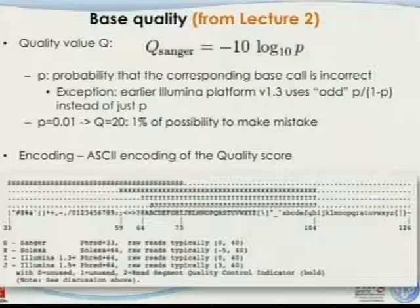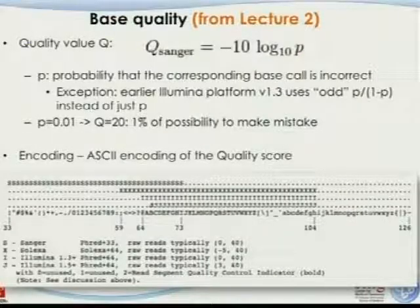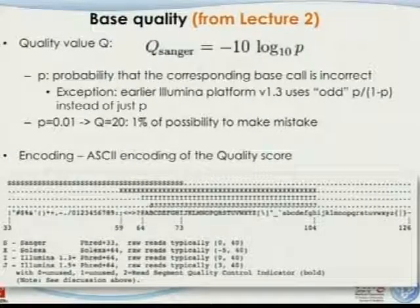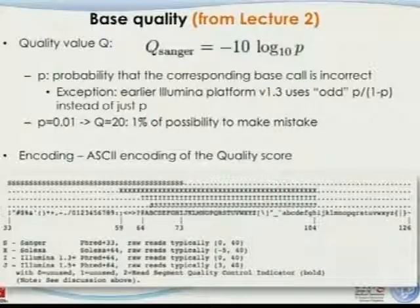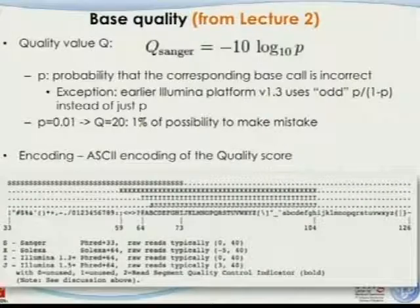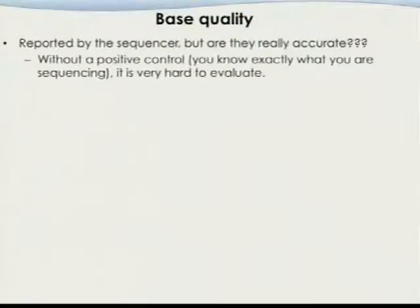Let's review what quality really means. We're talking about the base quality. Using a Phred-type scale, the smaller the p-value, the better the quality for that particular read, and therefore the Q-score will be better. The base quality reported by the sequencer — are they really accurate?